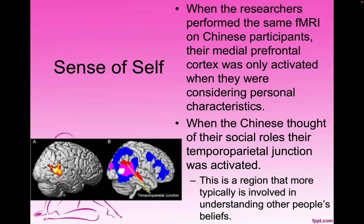When the researchers performed the same functional MRIs on Chinese participants, their medial prefrontal cortex was only activated when they were considering personal characteristics. When the Chinese thought of their social roles, their temporoparietal junction was activated — a region more typically involved in understanding other people's beliefs. In other words, when thinking about social roles, they were thinking about what other people were thinking about them.